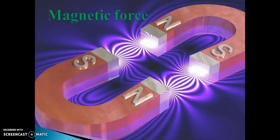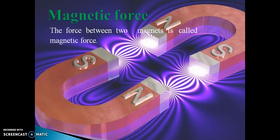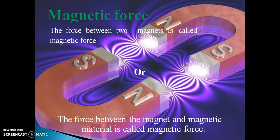Now let us define magnetic force. The force between two magnets is called magnetic force. One magnet applies force on another magnet, whether attraction or repulsion, by magnetic force. We can also define it as the force between a magnet and a magnetic material.